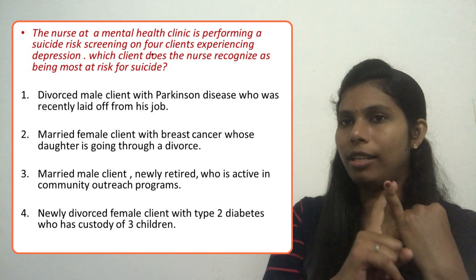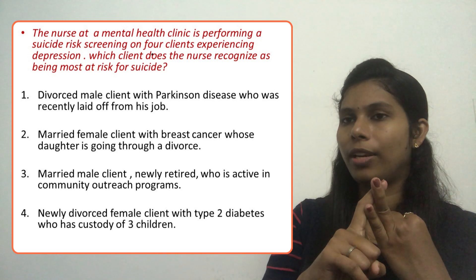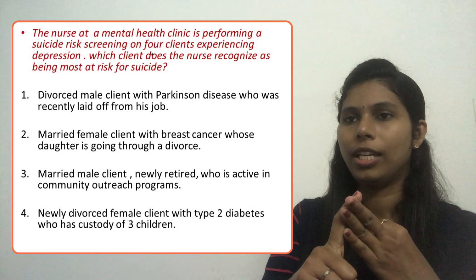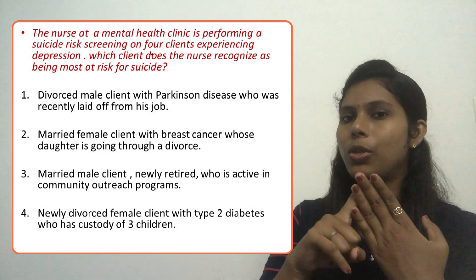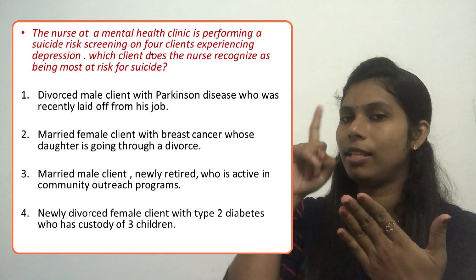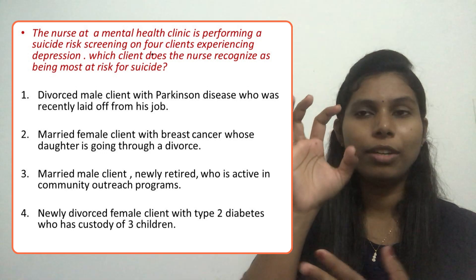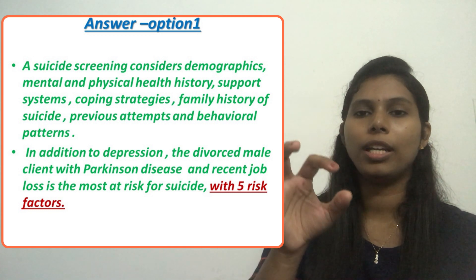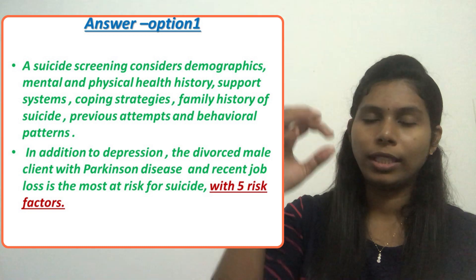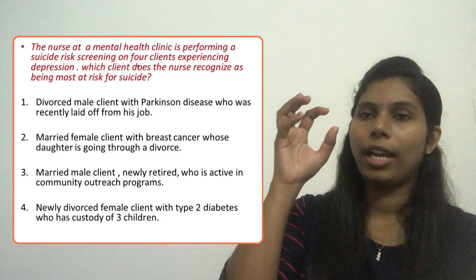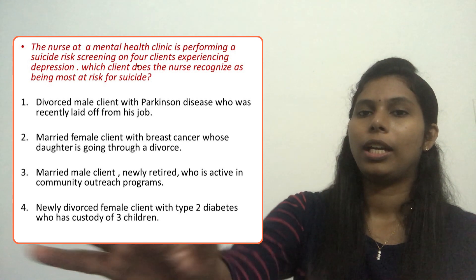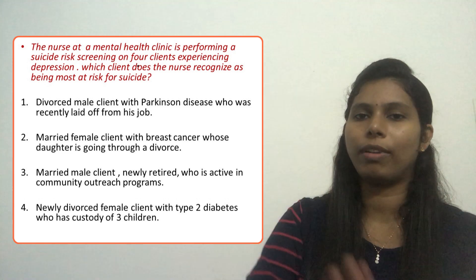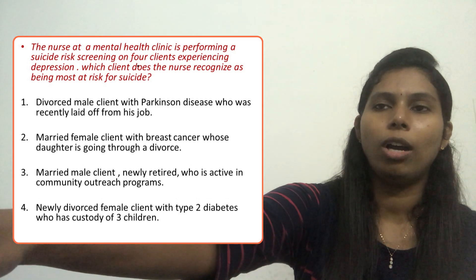Option one — the divorced male client: first risk factor is divorce, second is Parkinson's disease (chronic illness), third is recently being laid off from his job (unemployment), fourth is that males complete more suicide attempts (a demographic risk factor), and fifth is his depression diagnosis. Option one has approximately five risk factors and no positive protective factors — all factors are negative. Therefore, the client in option one is most at risk for committing suicide.